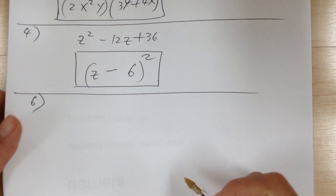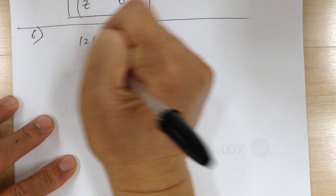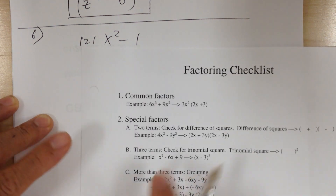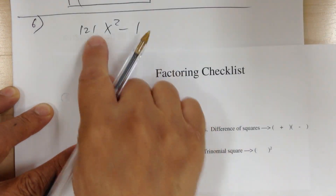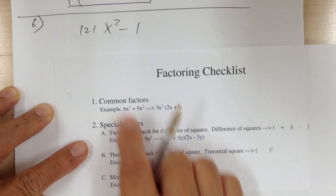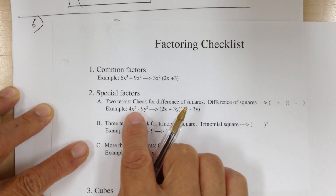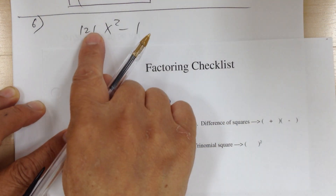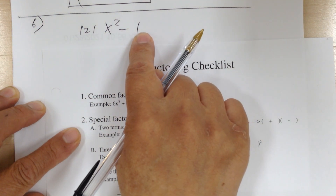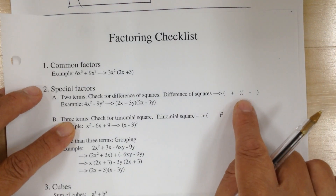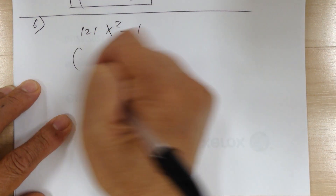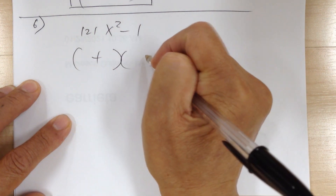Number 6: you have 121x² - 1. Step 1, common factor — nothing. Step 2: this is 2 terms, so check this one — it's a difference of squares. You have a square minus a square. 121x² is a perfect square and 1 is 1 squared. So you need to break it into conjugates, giving you two sets with plus and minus.